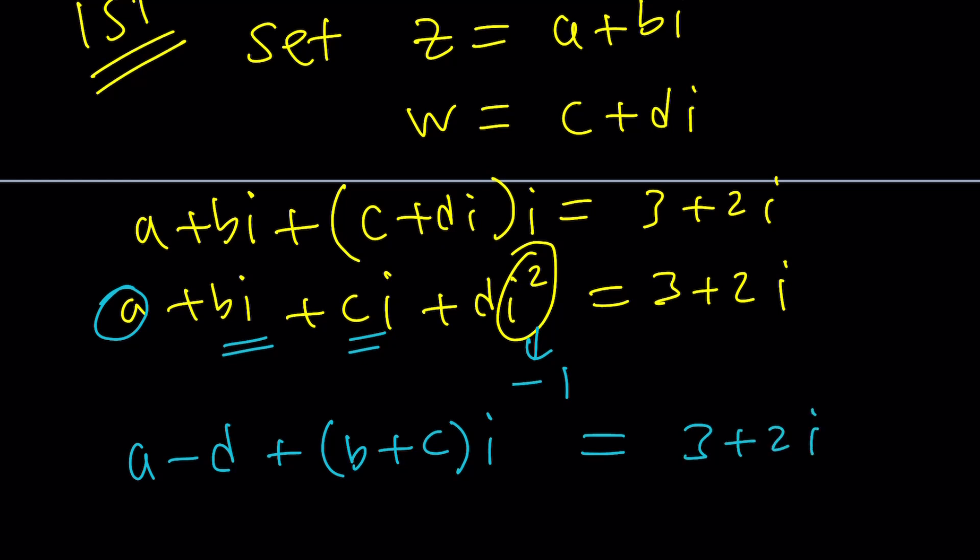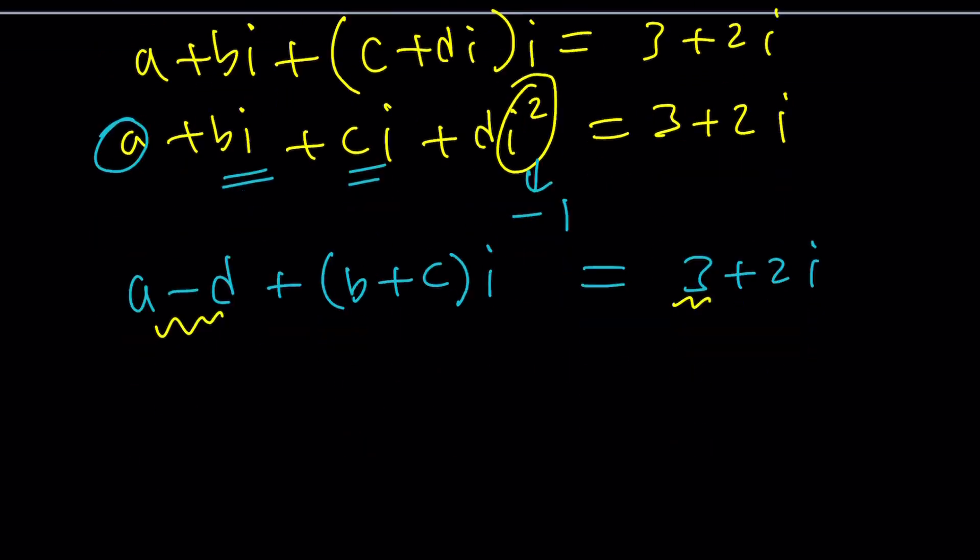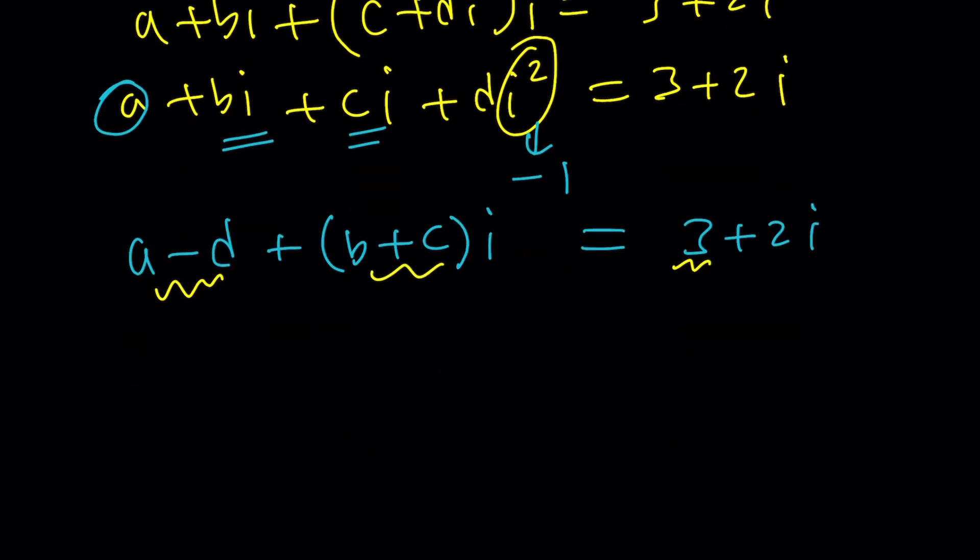So we have a minus d, and then we can factor these out like (b plus c)i, and that equals 3 plus 2i. When are two complex numbers equal? When the real parts are equal and their imaginary parts are equal. So we got this equality, 3 and 2. Great.